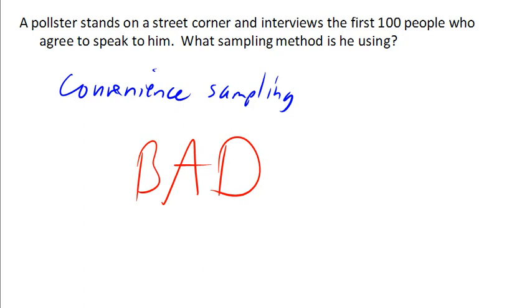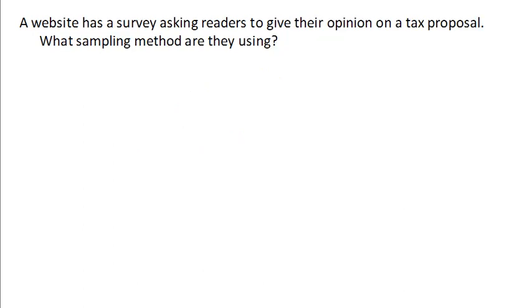Very similar, though, is this situation. A website has a survey asking readers to give their opinions on a tax proposal. What kind of sampling method are they using? This is called a voluntary response sample. And it is in many ways similar or related to the convenience sample because it is a convenience sample. The real key here is that the sample is volunteering to be part of the study. What tends to happen is that it's skewed towards people who either have a really strong opinion on the matter or just have way too much time on their hands and enjoy filling out surveys. So this, again, tends to be a bad method for choosing a sample.